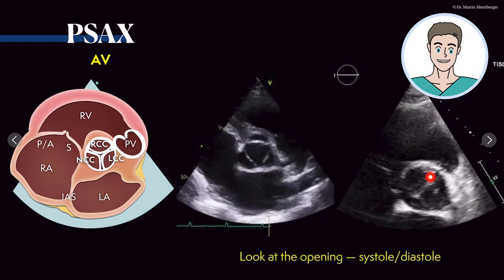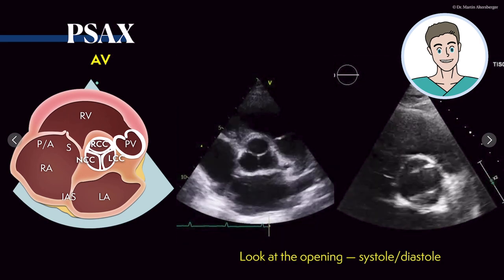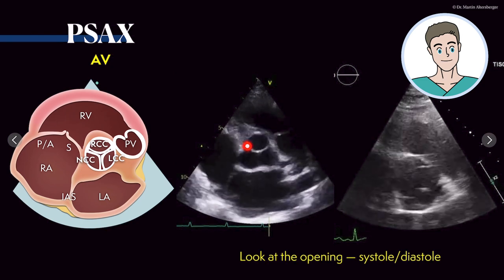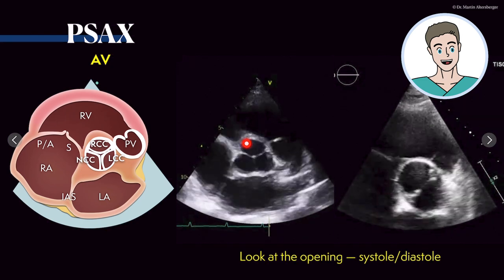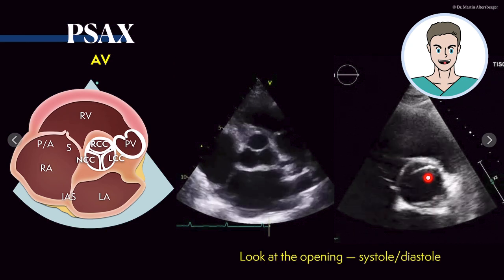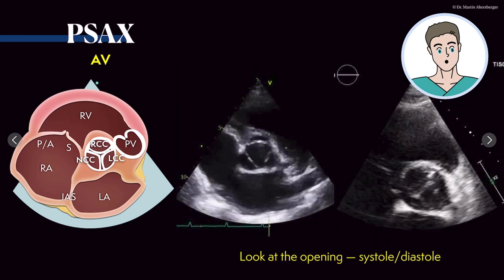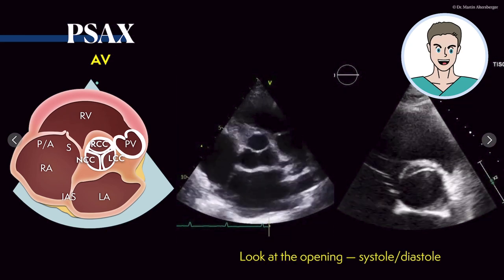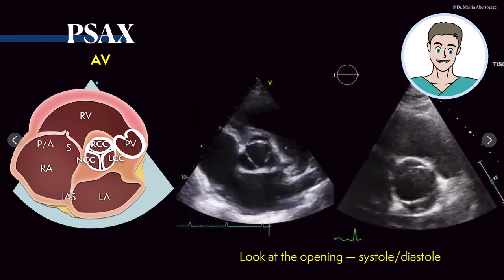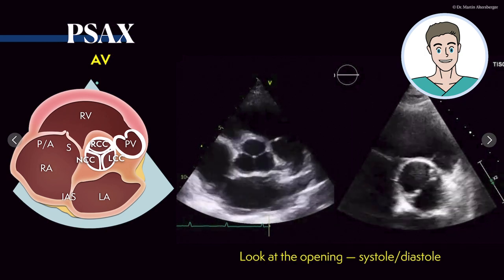It opens quite nicely, but there's a difference in the morphology. This is a tricuspid valve — the aortic valve is normally tricuspid. Here you only have two cusps, so there's one missing. This is a so-called bicuspid aortic valve. Very importantly, look at the opening and the closure — so systole and diastole.